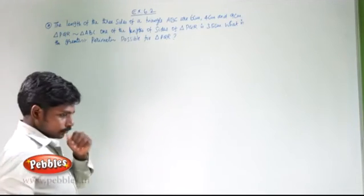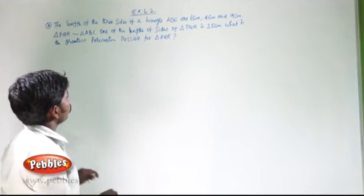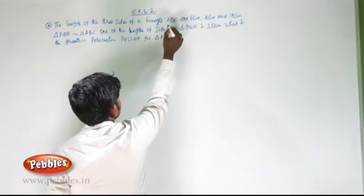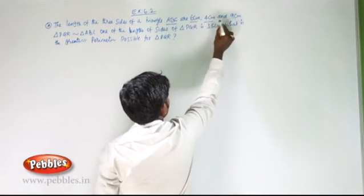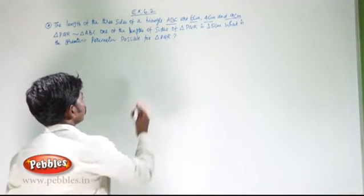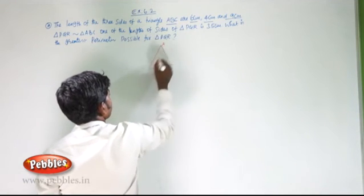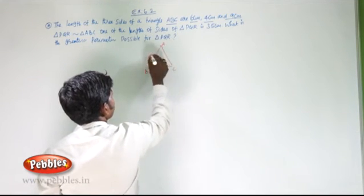The lengths of the three sides of triangle ABC are 6 cm, 4 cm, and 9 cm.